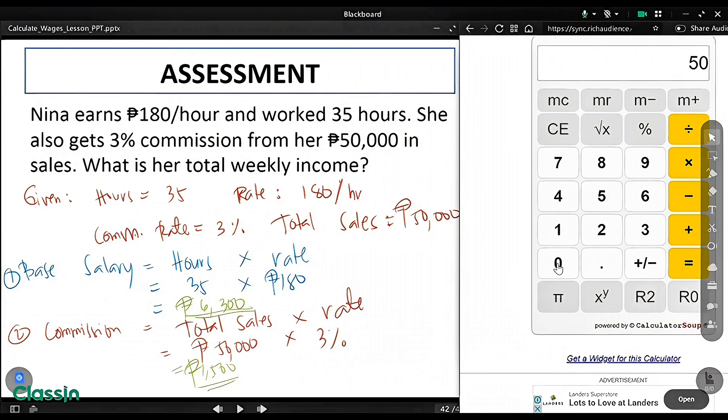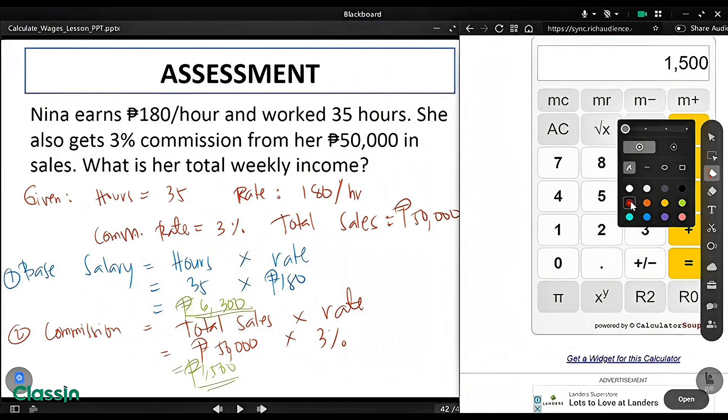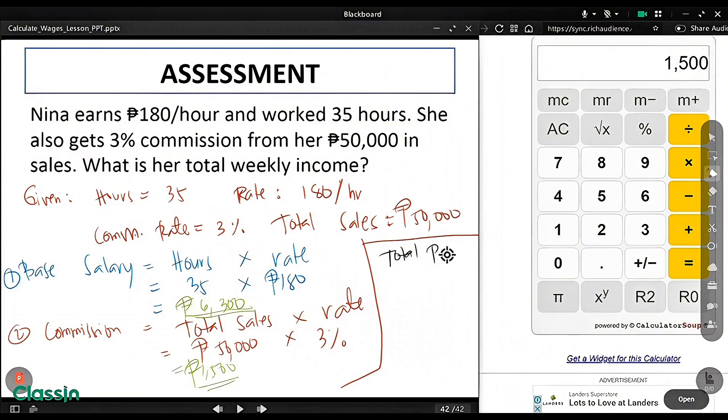Now, next step is to get the total pay of Nina. In order to do that, we need to add the base salary and the commission. Total pay equals base salary plus commission pay. So, 6,300 plus 1,500 equals 7,800. So, the total pay of Nina is 7,800.